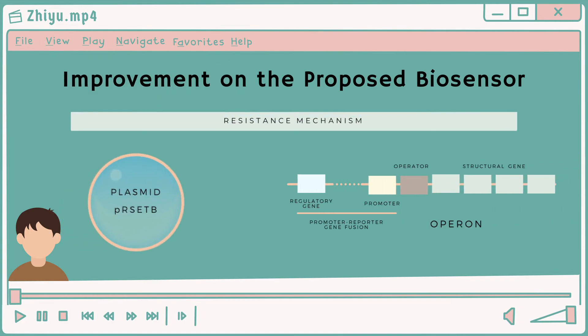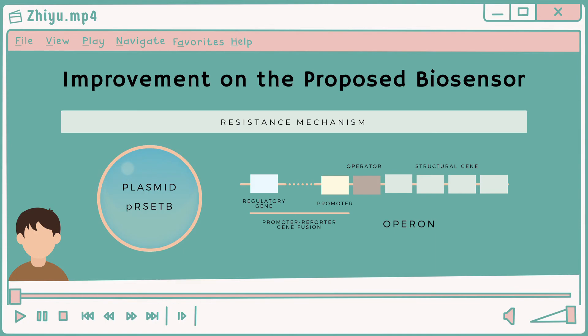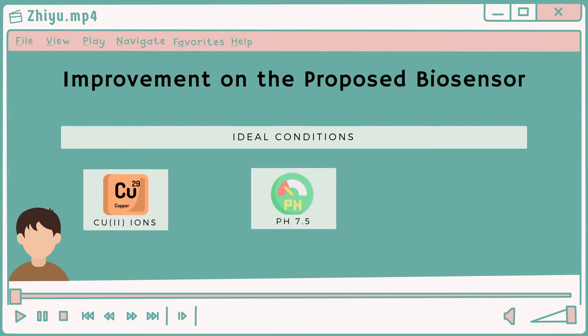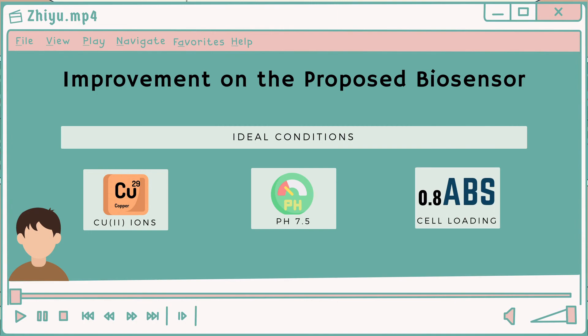The resistance mechanisms are organized in operons and are usually found on plasmids carried by resistant bacteria. The regulatory genes and promoters from the resistance operons can be used to construct promoter-to-reporter gene fusions for the construction of metal ion biosensors. In my opinion, the E. coli GFP biosensor has the highest sensitivity to copper(II) ion toxicity compared to other metal ions, an optimum at pH 7.5, and higher sensitivity at 0.8 absorbance of E. coli GFP cell loading. Further research may be achieved through bioengineering to improve fluorescence even at large concentrations of heavy metals.